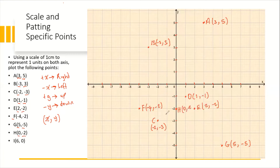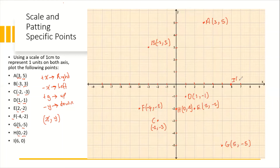For Point I, we have positive six as the x coordinate and zero as the y coordinate. From the origin, we go six units to the right: one, two, three, four, five, six — and zero movement on the y, so it sits right on the x-axis. That is Point I with coordinate (6, 0). That is how you plot points on a specific scale. Thank you for watching, enjoy the rest of your day.